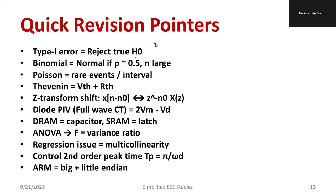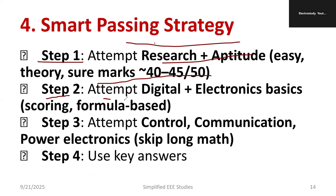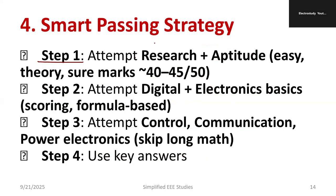Now for a smart passing strategy, follow these steps. Step one: focus on research and aptitude — make sure you get 40 to 45 out of 50. Step two: for the technical part, attempt simple questions from digital and electronics basics using direct problem-solving methods. Step three: attempt control, communication, and power electronics questions. Step four: use the previous answer key and study those questions — don't just read them, otherwise you may forget them during the examination.